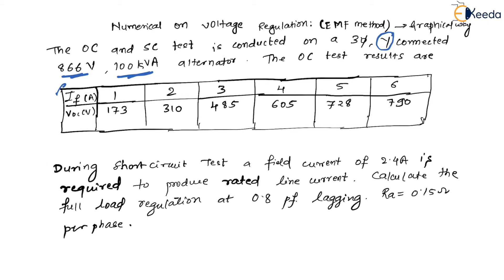Since all given voltages are line voltages, in order to convert them to phase voltages we need to divide by √3. This is because the machine is star connected, and for a star connection V_phase = V_line / √3. This is a school-level basic we have already seen.